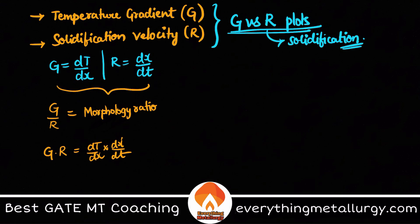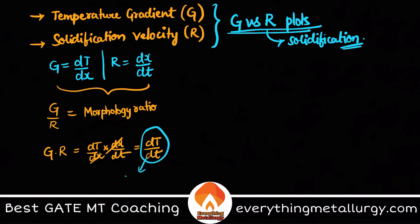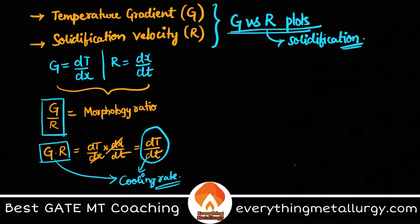G×R is interesting: it is dT/dx multiplied by dx/dt, and the dx terms cancel, leaving dT/dt — which is the cooling rate. So the product G×R tells us the cooling rate, while G/R tells us the morphology — that is, the type of structure forming. The cooling rate in turn determines the size of whatever morphology is produced.